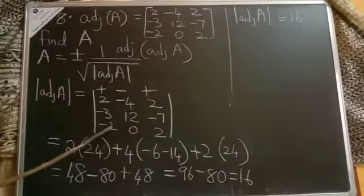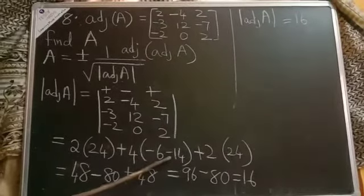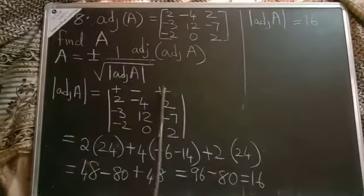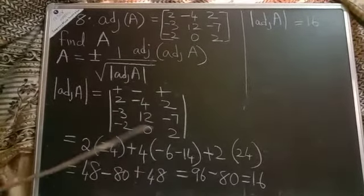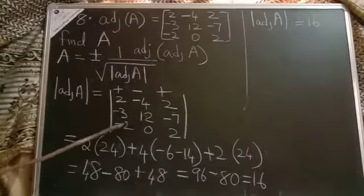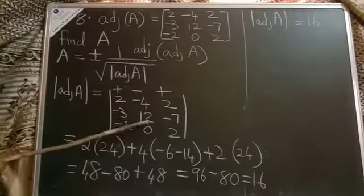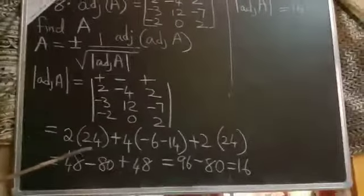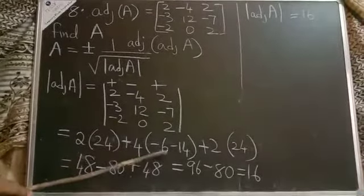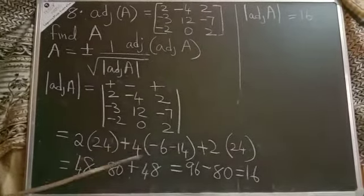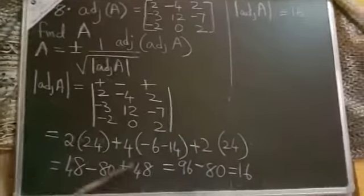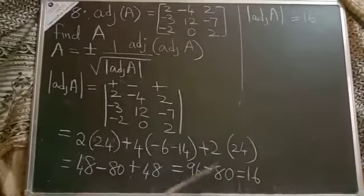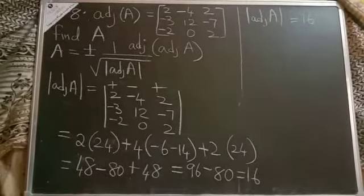Next, multiply: plus 14. But opposite sign gives minus 14. Next, plus 2 — in that particular column and row, we get 0, so it contributes 0. Next, multiply gives minus 24, and with the opposite sign, plus 24. Simplifying: 24 times 2 is 48, minus 20 into 4 is minus 80, 24 times 2 is 48. So 48 plus 48 is 96, and 96 minus 80 gives 16. This is our determinant of adjoint A.